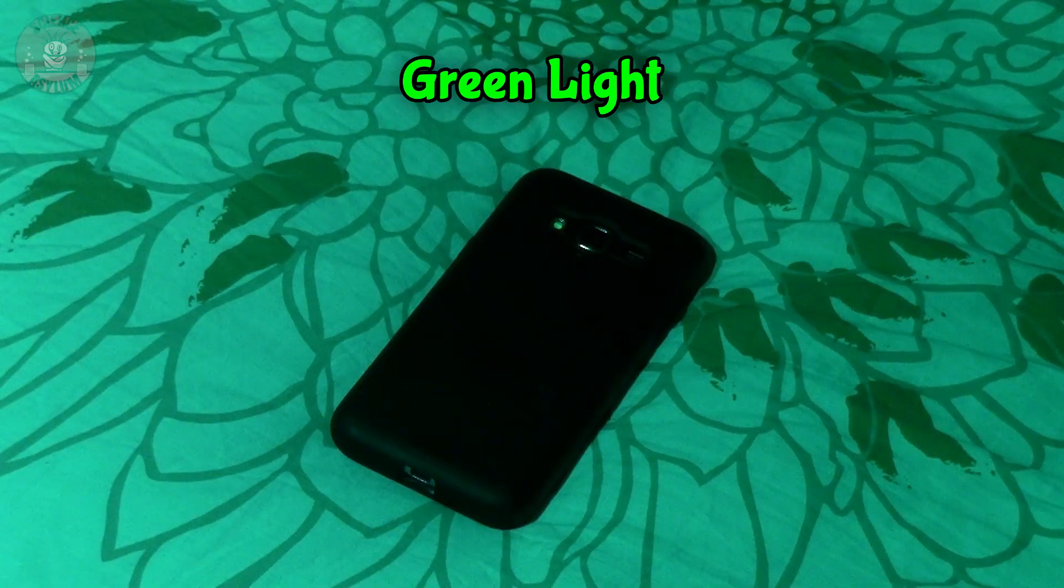Objects just absorb some colors and reflect others. I'm totally serious. My phone case isn't red. It just reflects red light. If you put it under different colored light, it'll be a different color.